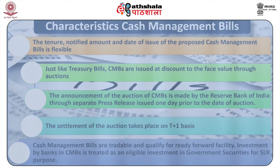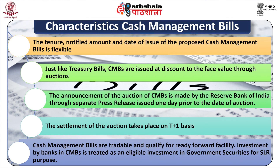Characteristics of Cash Management Bills: The tenure, notified amount, and date of issue of cash management bills are flexible, depending upon the temporary cash requirement of the Government of India. However, the tenure is limited to less than 91 days. Just like treasury bills, CMBs are issued at a discount to the face value through auctions. The announcement of the auction of CMBs is made by the Reserve Bank of India through a separate press release issued one day prior to the date of auction. The settlement of the auction takes place on a T+1 basis. Cash management bills are tradable and qualify for the ready forward facility. Investment by banks in CMBs is treated as eligible investment in Government Securities for SLR purposes.